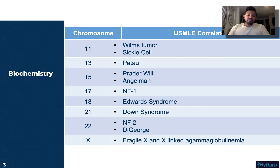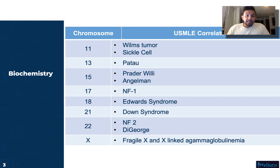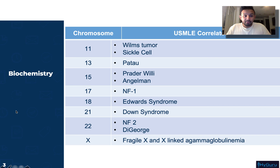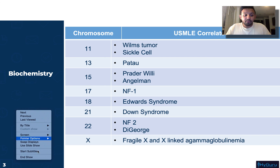Finally, the X chromosome is related to fragile X syndrome — a common cause of developmental delay and intellectual disability — as well as X-linked agammaglobulinemia. These patients are not going to have any B cells or antibodies, so they're going to have recurrent bacterial infections. Those are all the chromosomes — I hope this was helpful, and make sure to tune in for more videos.